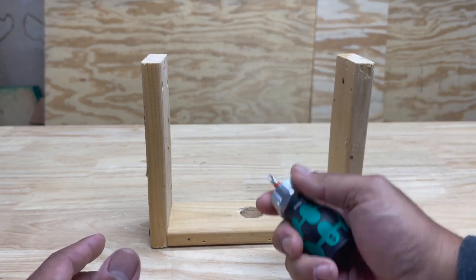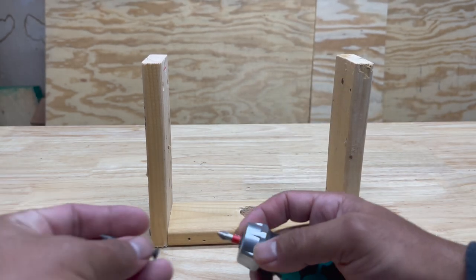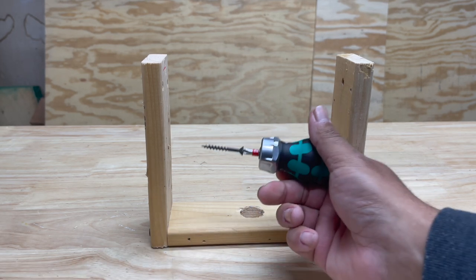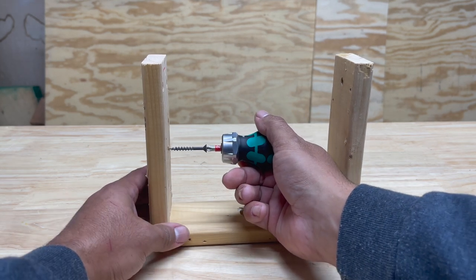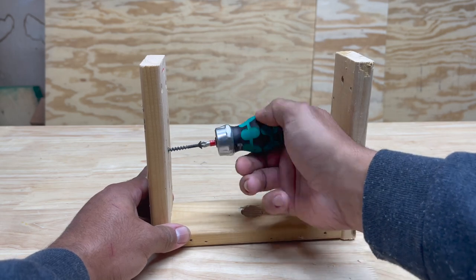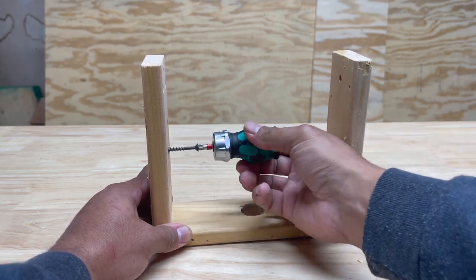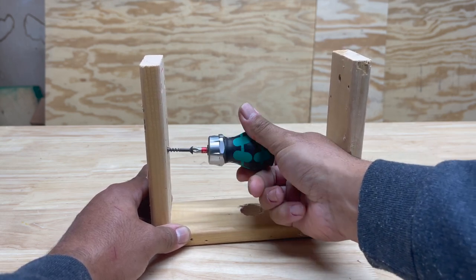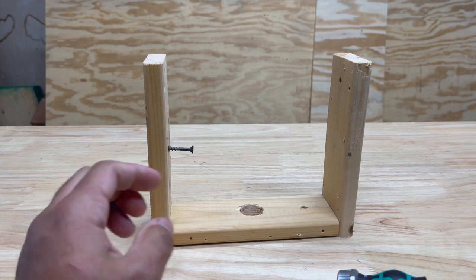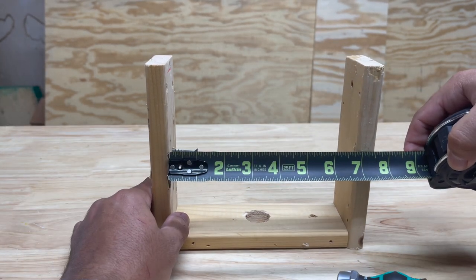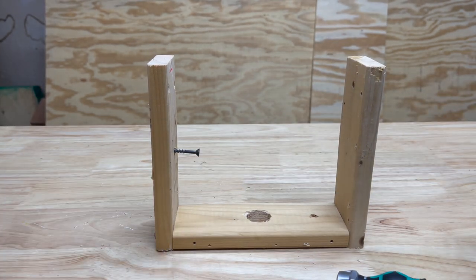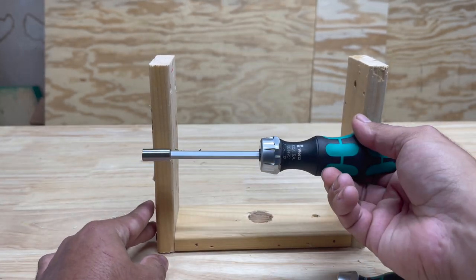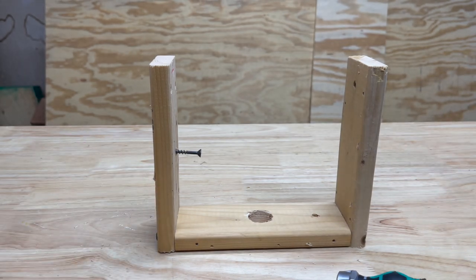You can use these as traditional screwdrivers, obviously you're not going to get as much purchase and get as much torque on these, but in a situation like this this is where these really shine, getting in here and being able to get a screw in a location that in this particular case is less than seven inches wide. If you try to take something like this, this screwdriver is obviously longer than the space you have right here.